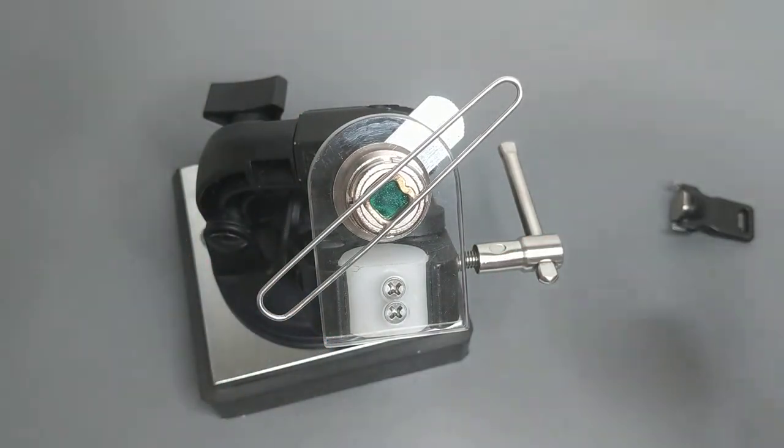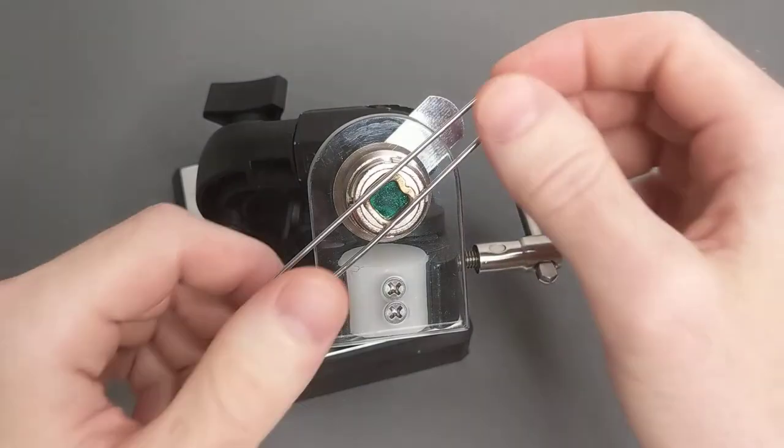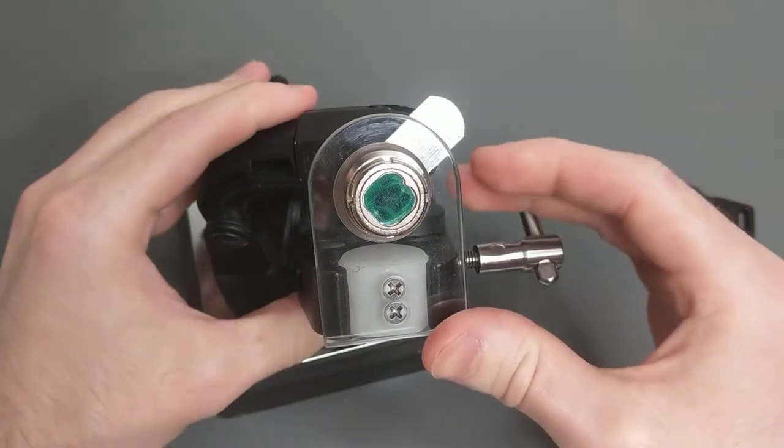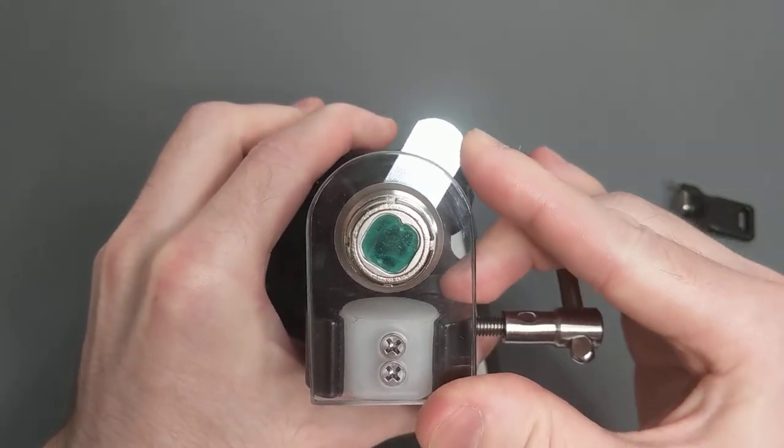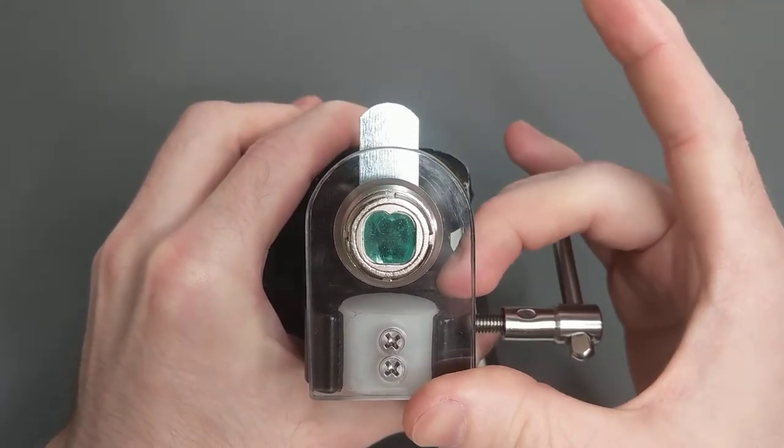So again, you don't need to know the combination beforehand because the gates are pretty obvious, and here show the pattern of that, and then as I relock it, the rotors re-scramble.